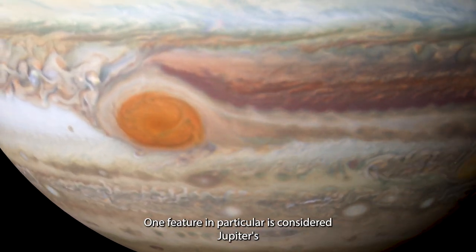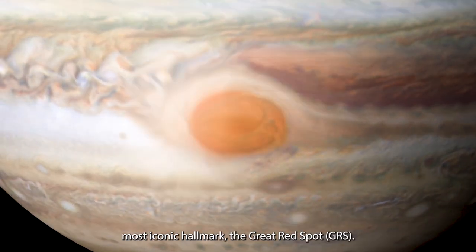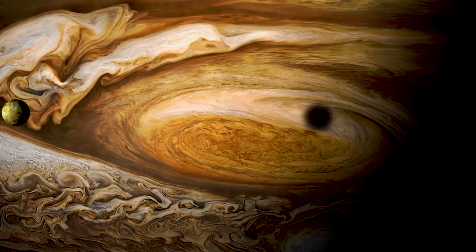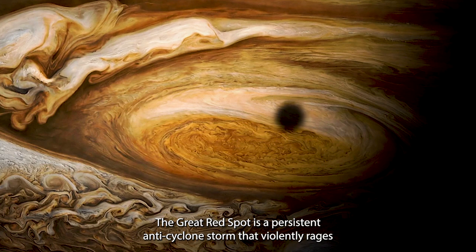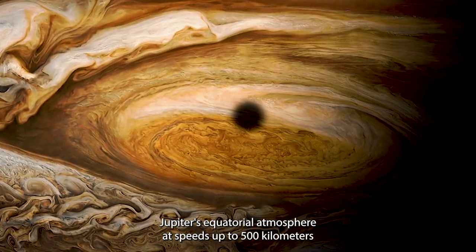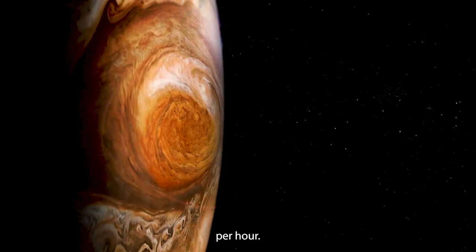One feature in particular is considered Jupiter's most iconic hallmark, the Great Red Spot. The Great Red Spot is a persistent anti-cyclone storm that violently rages Jupiter's equatorial atmosphere at speeds up to 500 kilometers per hour.